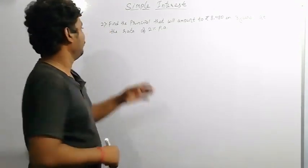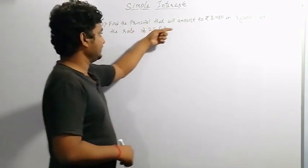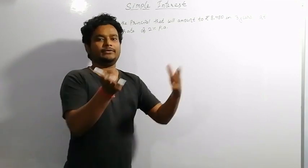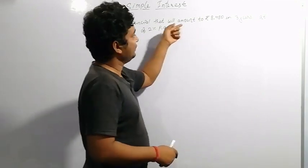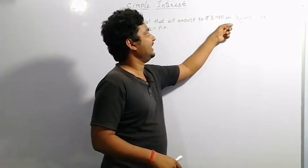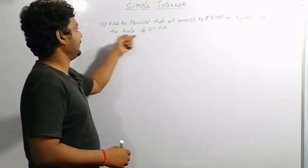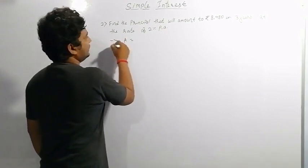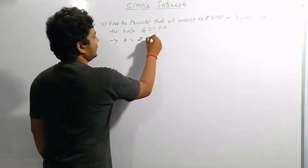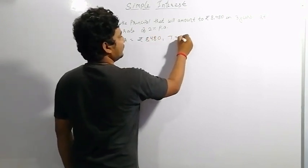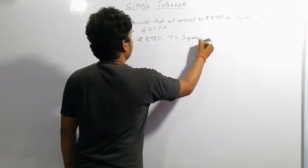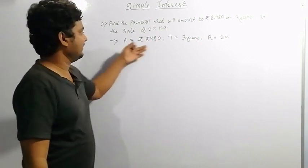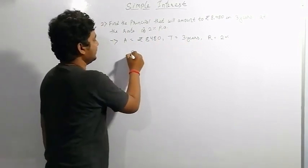Coming to question number 2, where we have to find the principal. A principal will amount to rupees 8,480 in 3 years at a rate of interest of 2%. So the given data is: amount equals rupees 8,480, time equals 3 years, and rate R equals 2%.